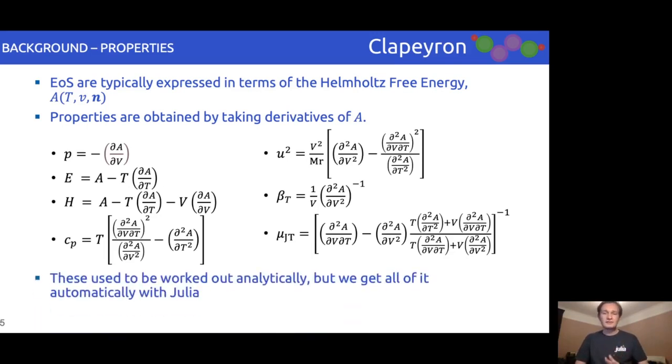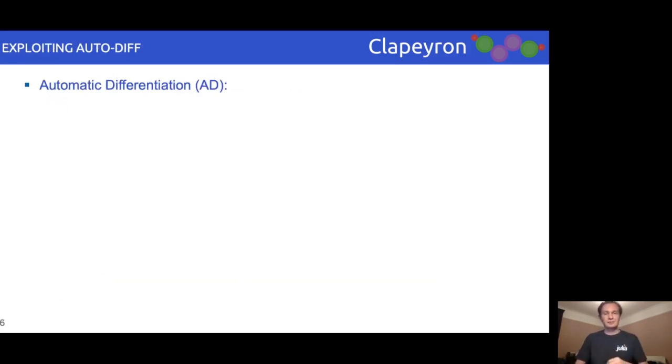In other packages, all of these derivatives would have to be worked out analytically. However, we can obtain all of this automatically in Clapeyron through the magic of autodiff. In Clapeyron, we only need to provide the Helmholtz free energy, and thanks to powerful autodiff tools in Julia, such as ForwardDiff, we can obtain all other properties.